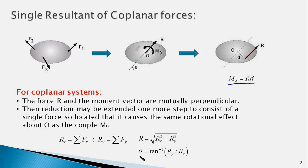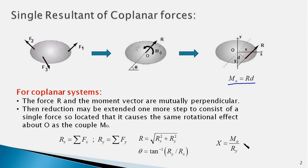We also have to specify the line of action of the resultant force with respect to the reference point O. In most problems you would be asked to compute the point of application of R either on the x-axis or y-axis, where the x and y axes form a coordinate system with the reference point O as the origin. The x-intercept and the y-intercept can be determined using the equations: x = Mo / Ry and y = Mo / Rx.